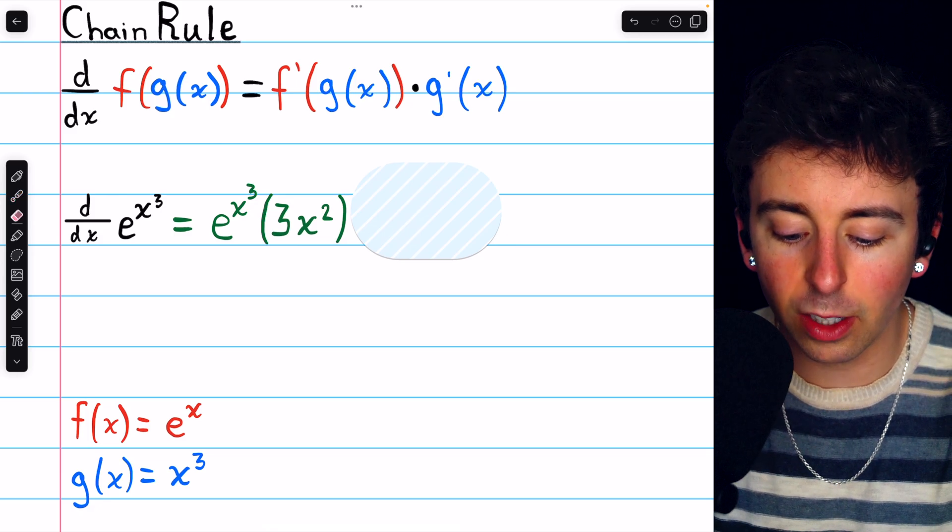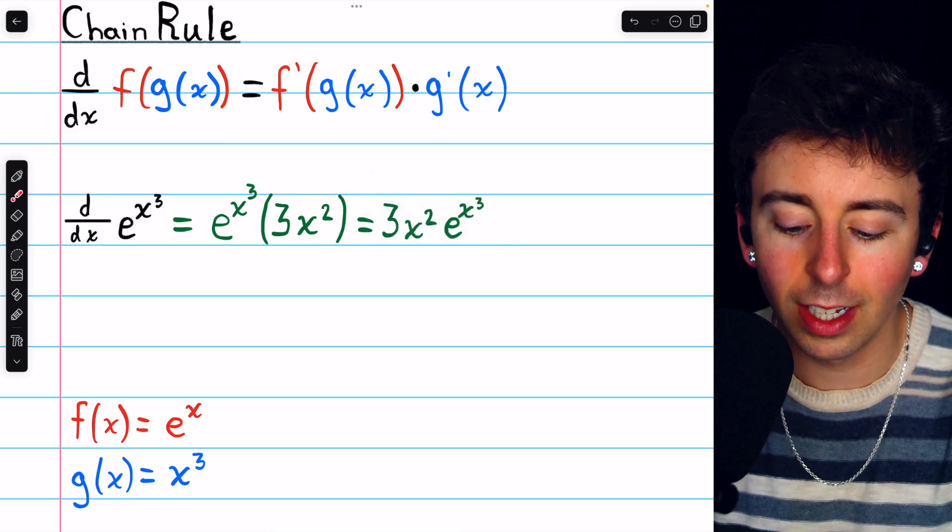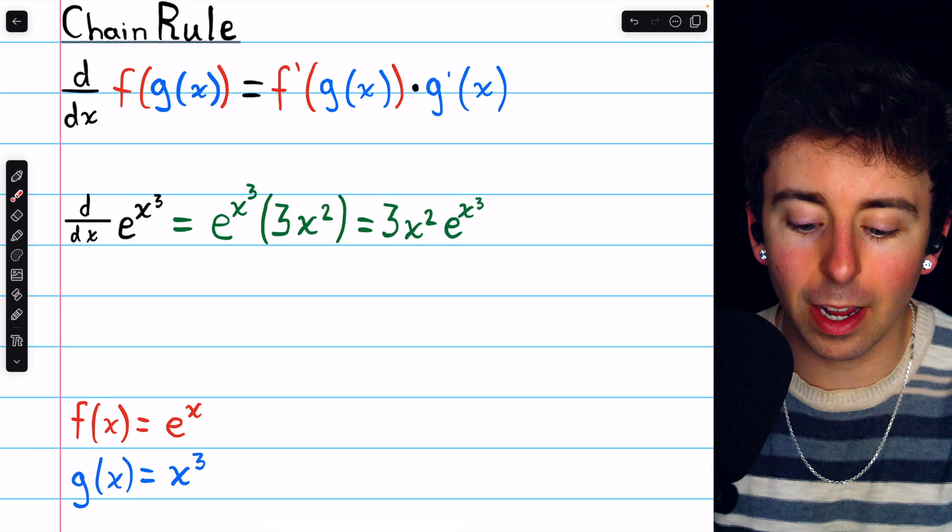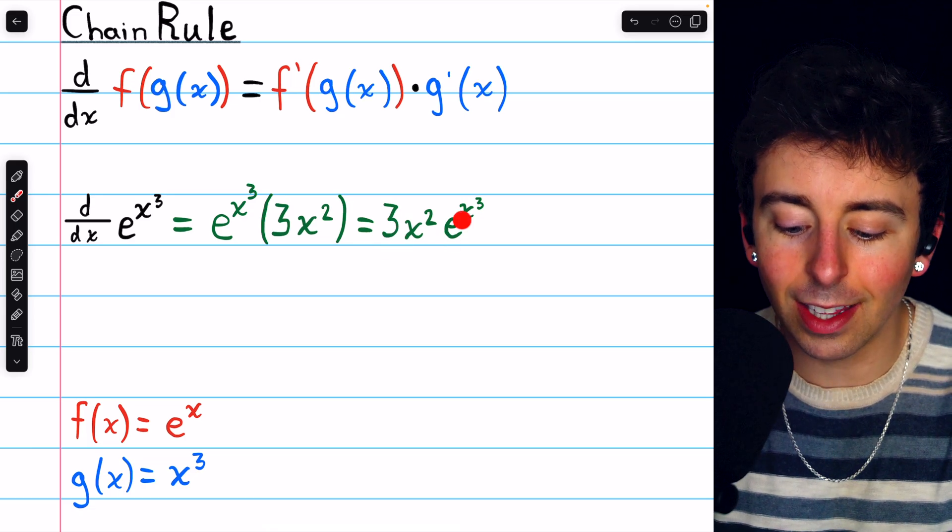Finally, just for style, we'll move the 3x squared to the front. This is how most people would prefer to write it, 3x squared e to the x cubed.